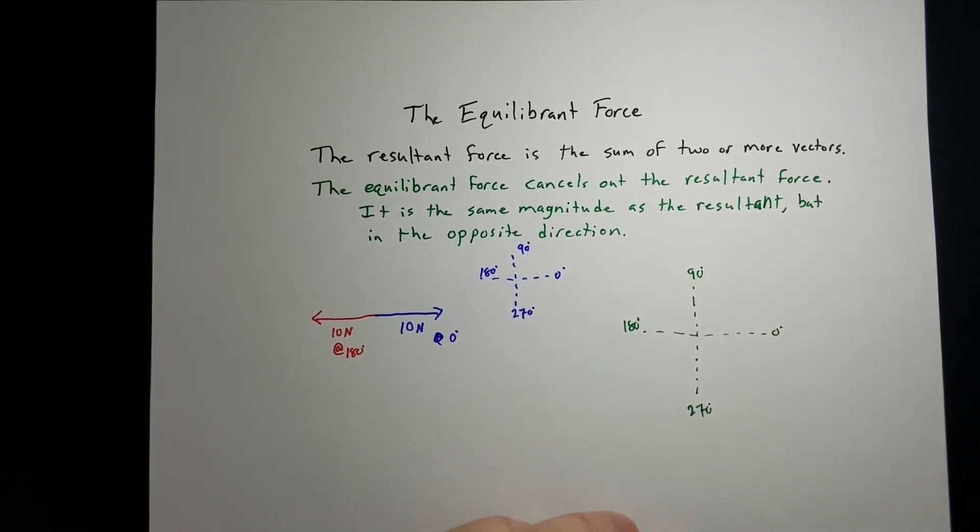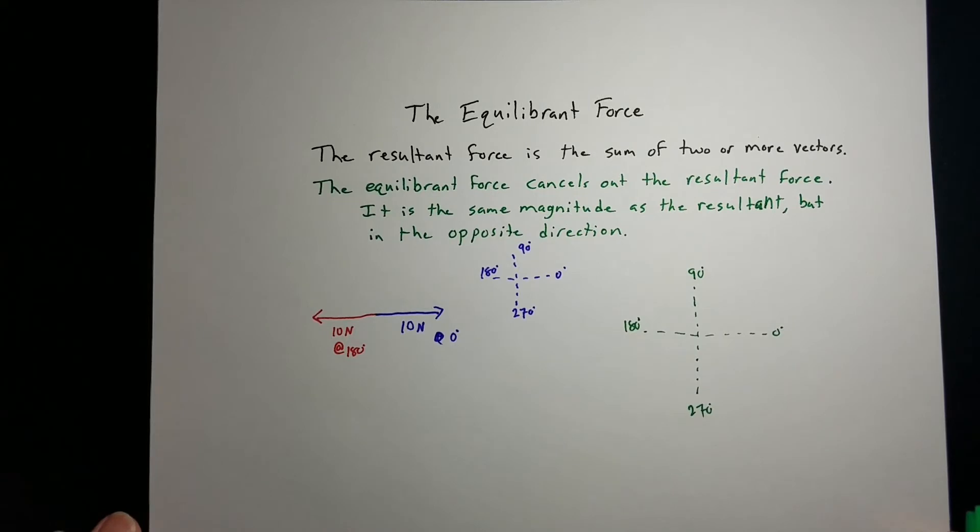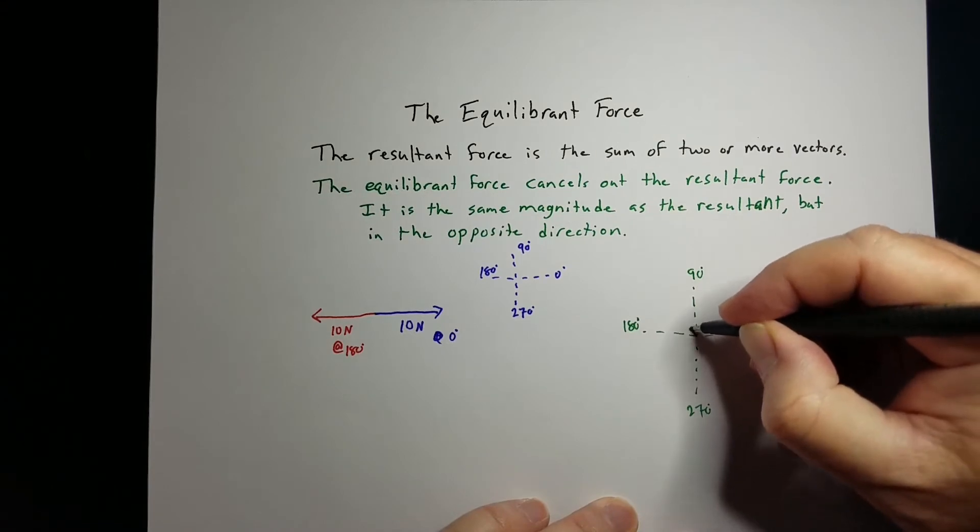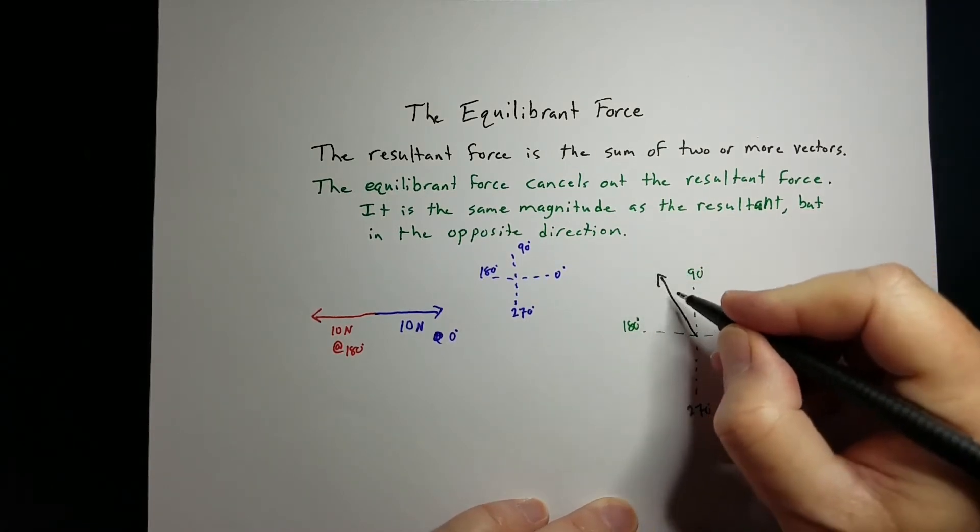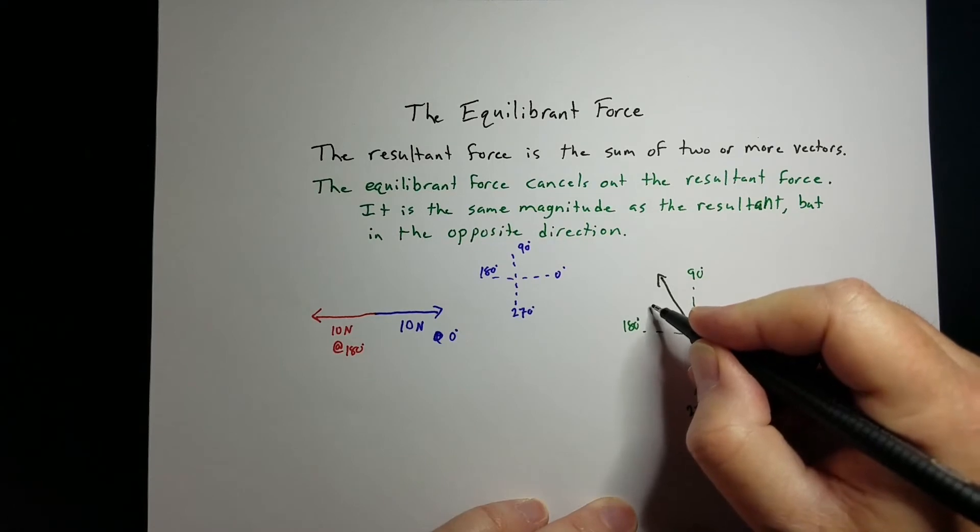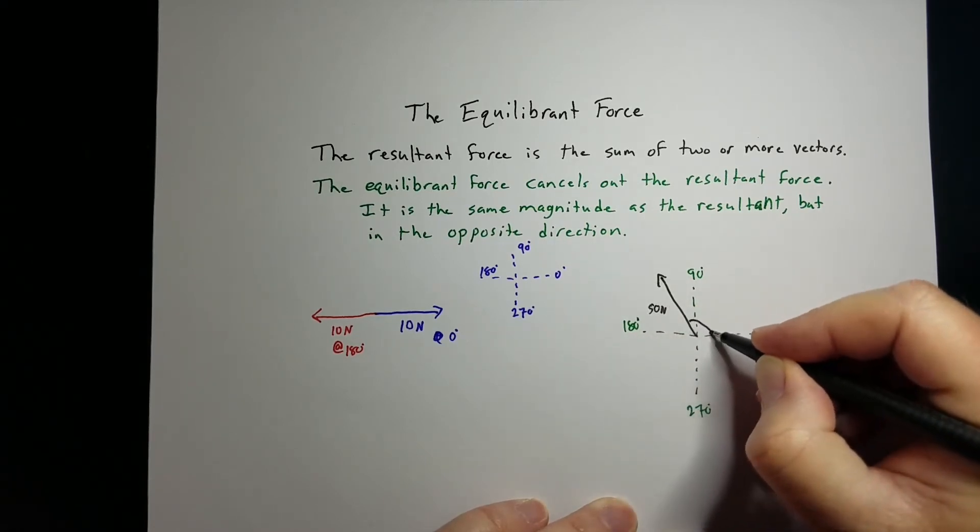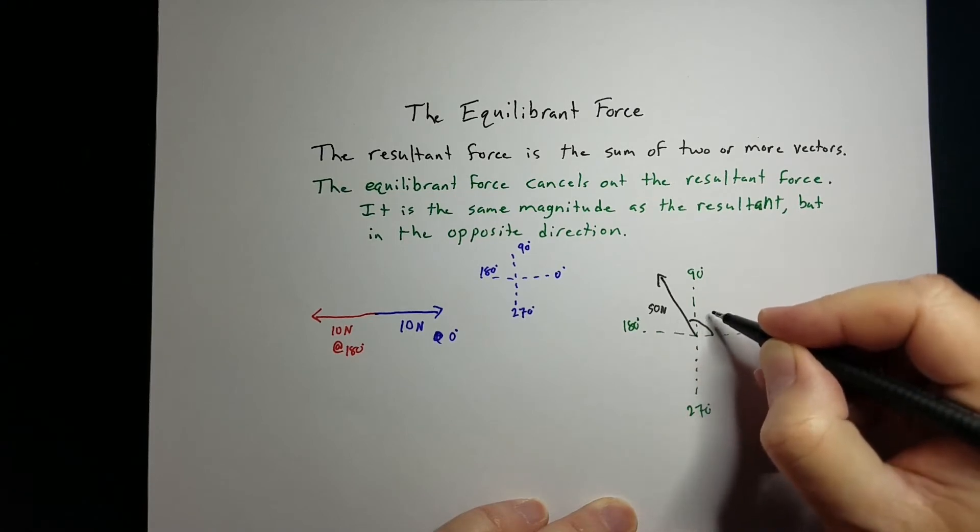Let's say I have a resultant force of 50 newtons at an angle of 110 degrees.